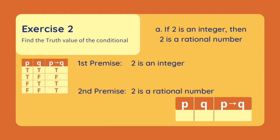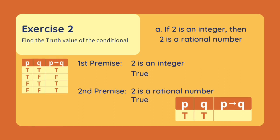Our first premise is '2 is an integer.' This is true because 2 is a number with no decimal or any fraction. Our second premise is '2 is a rational number.' This is also true because 2 can be expressed as 2 over 1, and 1 is not equal to 0. Since both our premises are true, our conditional is true.